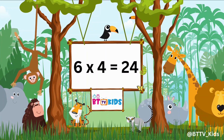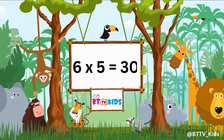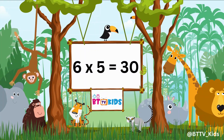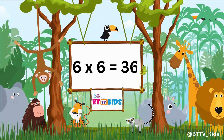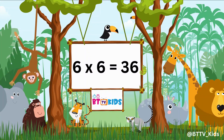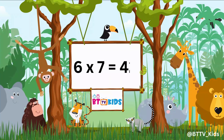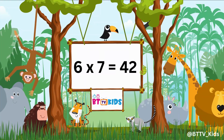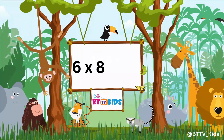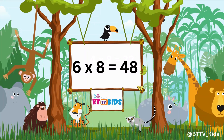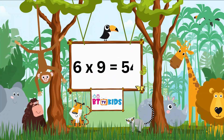Six fours are 24. Six fives are 30. Six sixes are 36. Six sevens are 42. Six eights are 48.